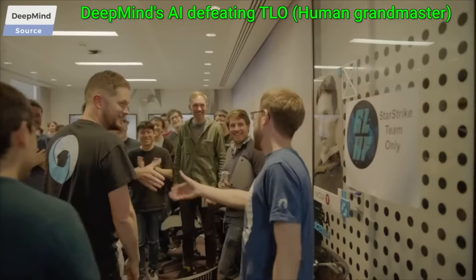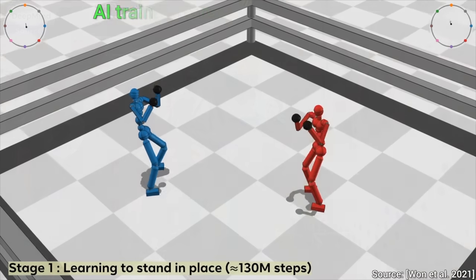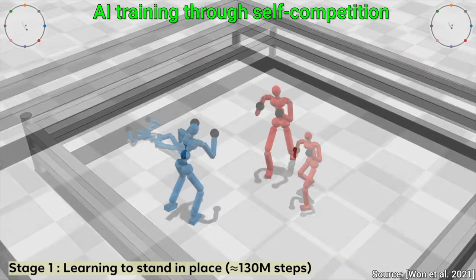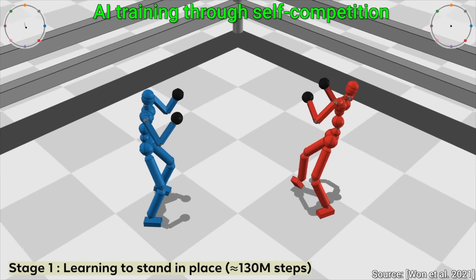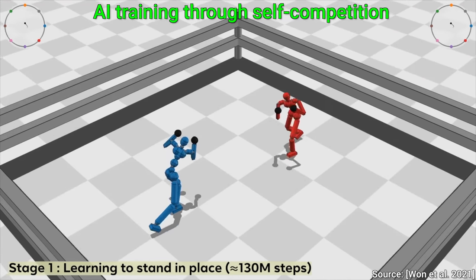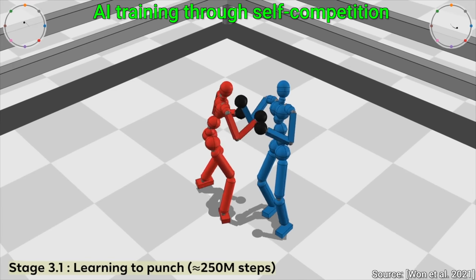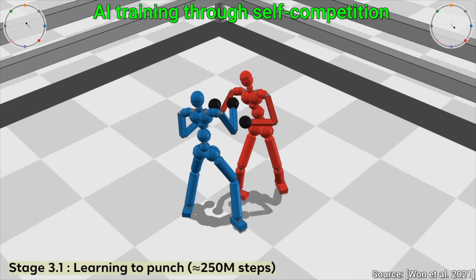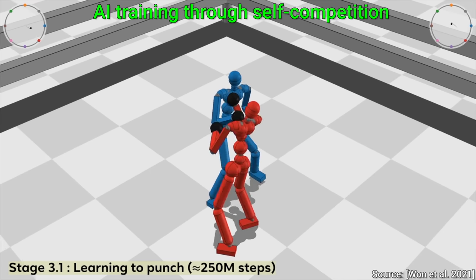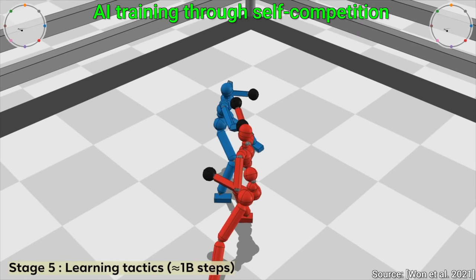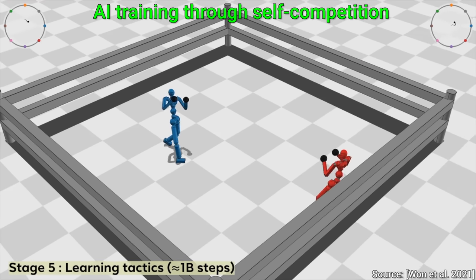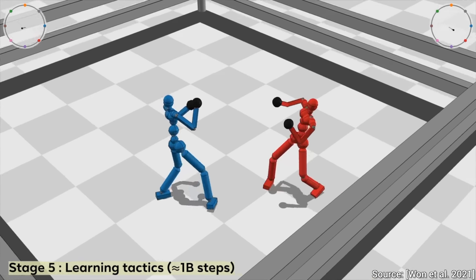And it also uses self-competition, which is now a popular concept in video game AIs. This means that the AI plays against previous versions of itself, and we measure its improvement by it being able to defeat these previous versions. If it can do that reliably, we can conclude that yes, the AI is indeed improving.